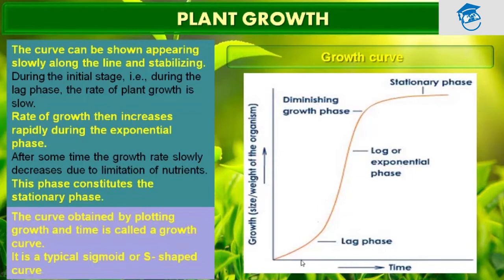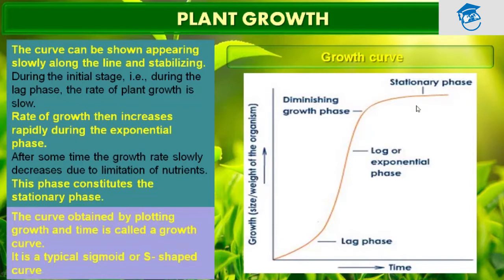During the lag phase the rate of plant growth is slow, then the rate of growth increases rapidly — that's why the curve rises steeply, showing exponential growth. After some time, the growth rate slowly decreases due to the limitation of nutrients, as nutrients may get degraded, and the plant's growth rate starts to decrease. This phase constitutes the stationary phase, giving the overall sigmoidal or S-shaped curve seen in plants.